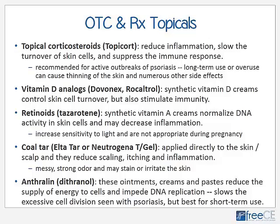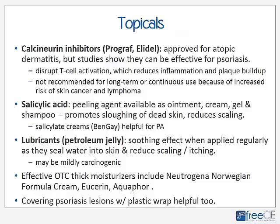Anthralin, also known as dithranol, comes as ointments, creams, or pastes that reduce the supply of energy to cells and impede DNA replication, thereby slowing the excessive cell division common with psoriasis. These are best for short-term use and can stain the skin and surrounding areas readily — typically the topical should be wiped off after about 15 minutes. Calcineurin inhibitors, with brand names Prograf and Elidel, are approved for atopic dermatitis but some studies show they can be effective for psoriasis plaques; they disrupt T-cell activation and are not recommended for long-term use due to increased risk of skin cancer and lymphoma.